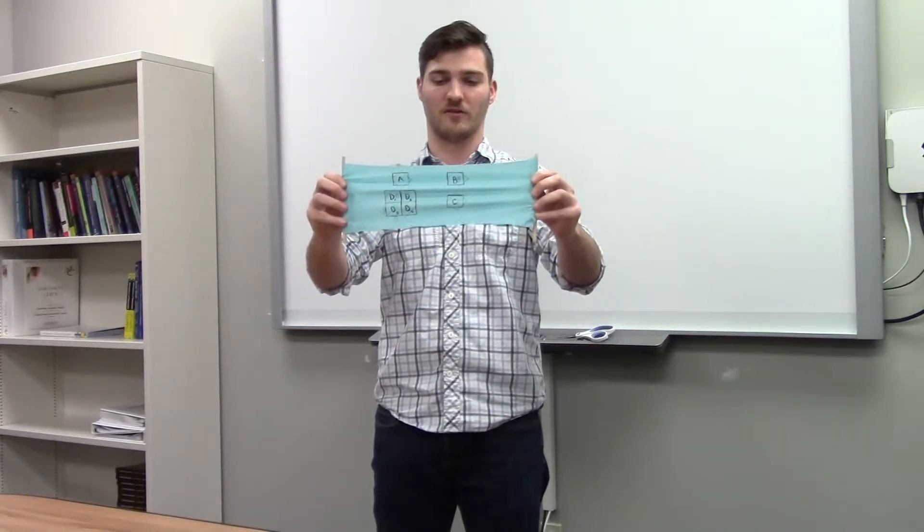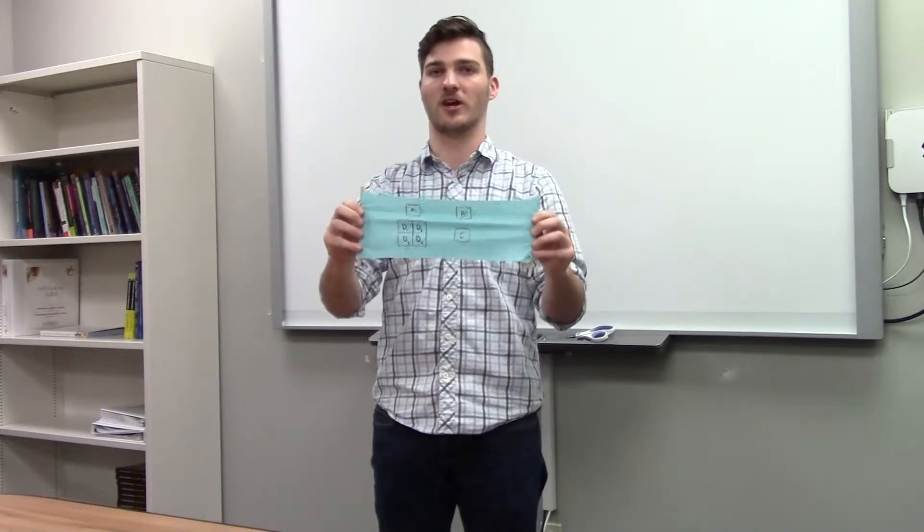So you could ask your students to measure the green side of each square and compare based on the location it is on the yoga band.